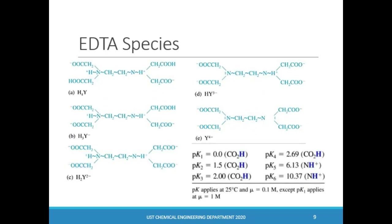The fully deprotonated EDTA is a hexaprotic weak acid with six successive pKa values for every H+ ion it releases. Its fully protonated form is H6Y with a charge of +2. It can easily remove two hydrogens given their low pKa values to form the neutrally charged species H4Y. The fully deprotonated form, Y4-, forms a one-to-one ratio with most metal ions in solution regardless of cation charge. However, looking at the pKa values, the fully deprotonated form needs at least a pH of about 10 to achieve a significant concentration.